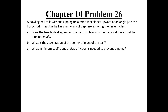This video will cover a solution guide to problem 26 from chapter 10. The bowling ball rolls without slipping up a ramp that slopes upward at an angle beta to the horizontal. Treat the ball as a uniform solid sphere and ignore the finger holes. Draw the free body diagram for the ball, explain why the frictional force must be directed uphill, find the acceleration of the center of mass, and find the minimum coefficient of static friction needed to prevent slipping.